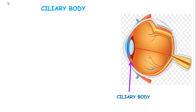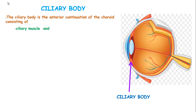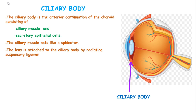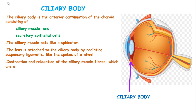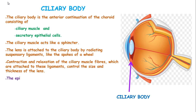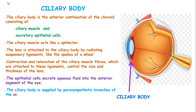The ciliary body is an anterior continuation of the choroid, consisting of the ciliary muscle and the secretory epithelial cells. The ciliary muscle acts like a sphincter. The lens is attached to the ciliary body by radiating suspensory ligaments which look like the spokes of a wheel. Contraction and relaxation of the ciliary muscle fibers control the size and thickness of the lens. The epithelial cells secrete aqueous fluid into the anterior segment of the eye. The ciliary body is supplied by sympathetic branches of the oculomotor nerve — the third cranial nerve — and its stimulation causes contraction of the ciliary muscle and accommodation of the eye.